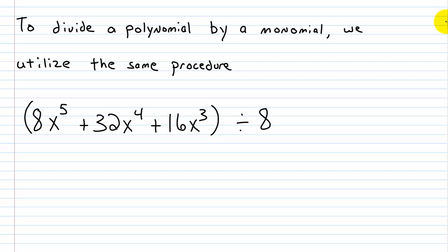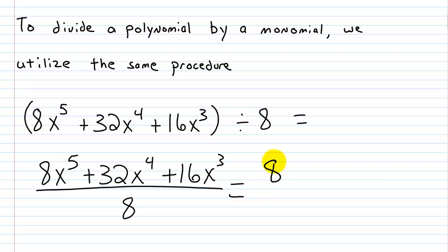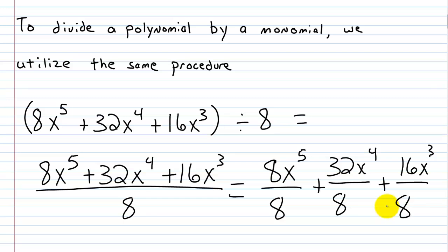To divide a polynomial by a monomial we use the same procedure. Take 8x⁵ + 32x⁴ + 16x³ all over 8. We have a common denominator, so we can split it up: 8x⁵/8 + 32x⁴/8 + 16x³/8. Now we can divide each part separately.